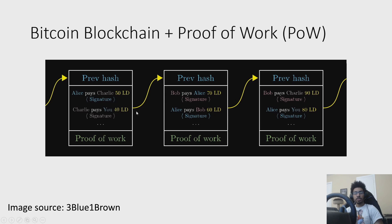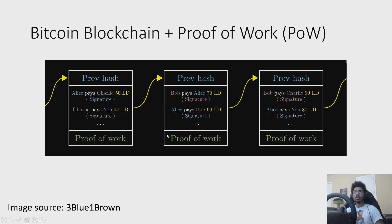Of course, this is connected to things like 51% attacks, where if Alice happened to have more than 50% of the hash rate on the network, she would always be able to produce a longer chain. She could basically censor transactions — she could just keep spitting out empty blocks, and because she has the most proof of work, she would be winning. There are other aspects of game theory and the Bitcoin protocol that address that, but realize that these concepts are connected.